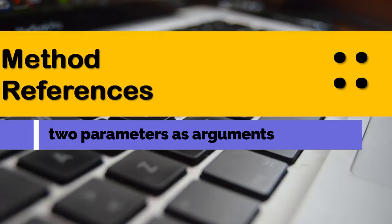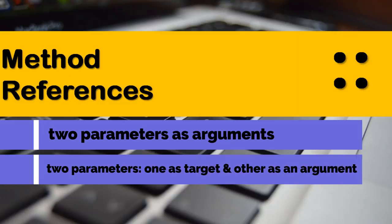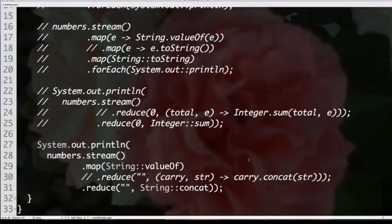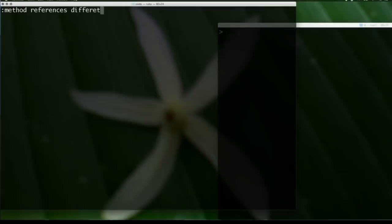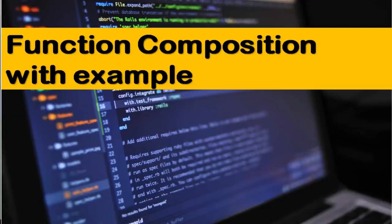There are two limitations when it comes to method references. First, you cannot use them if you are doing any manipulation of the data. Second, you cannot use them if there is a conflict between an instance method and a static method. When the compiler tries to substitute the method reference, if it finds one method it can use, it's happy; if it finds two potential candidates, it will give you an error. That's why you saw me getting an error for the toString method — Integer.toString is both a static method and an instance method. There are workarounds, but in general, it will give you an error when there is ambiguity.